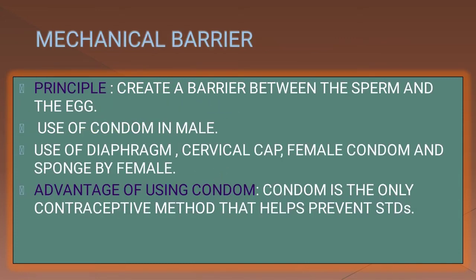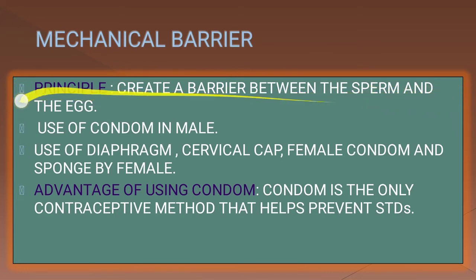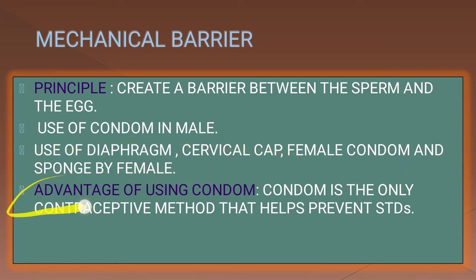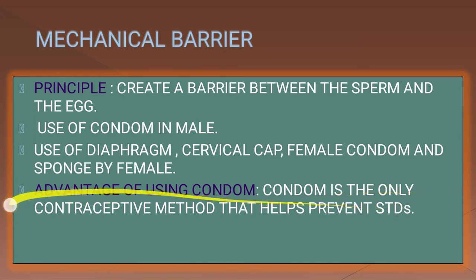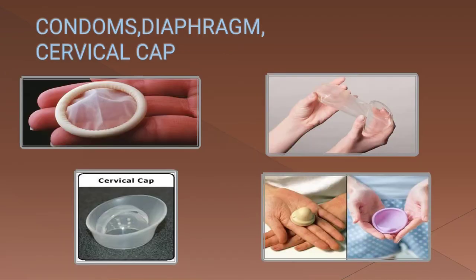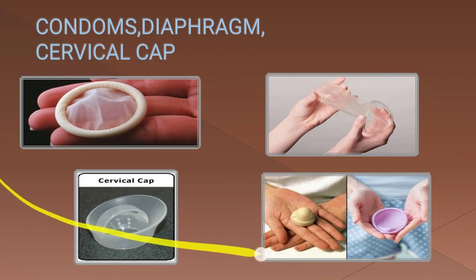The mechanical barrier principle creates a barrier between the sperm and the egg. Examples include use of a condom in males, and use of a diaphragm, cervical cap, female condom, and sponge by females. An advantage of using a condom is that it is the only contraceptive method that also helps prevent STDs. Shown here are the male condom, female condom, cervical cap, and diaphragm.